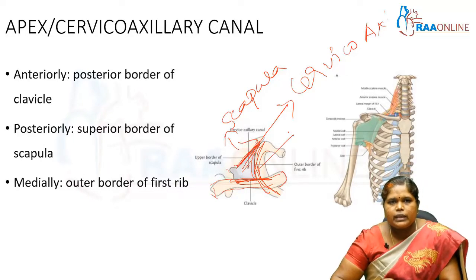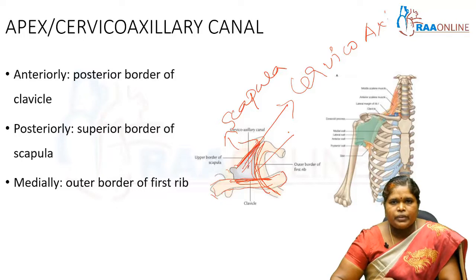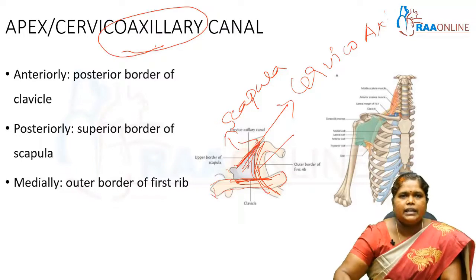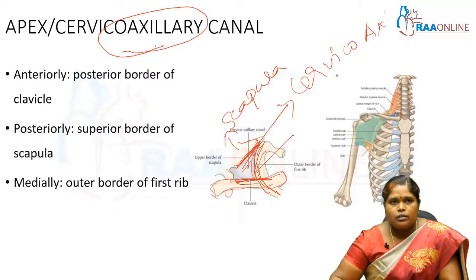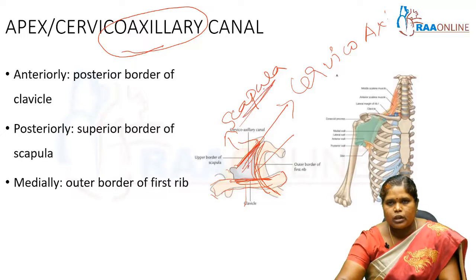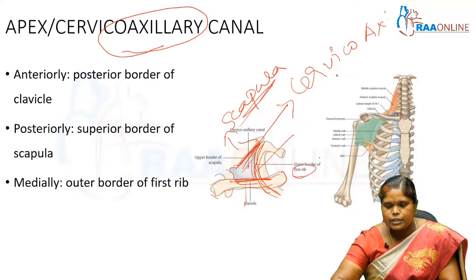So this is about the apex of the axilla — the apex, otherwise known as the cervico-axillary canal — which is bounded in front by the clavicle, behind by the scapula, and medially by the first rib.